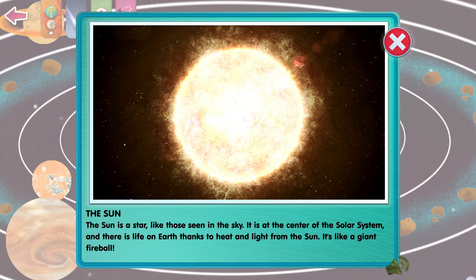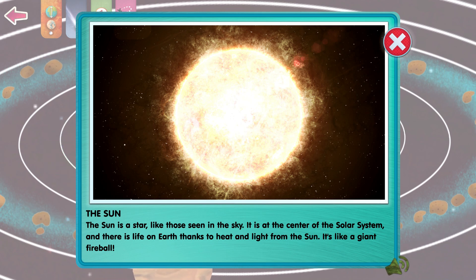The Sun is a star like those seen in the sky. It is at the center of the Solar System, and there's life on Earth thanks to heat and light from the Sun. It's like a giant fireball.